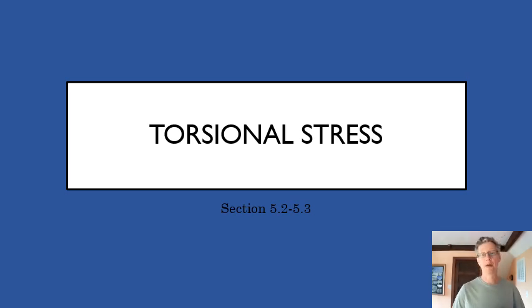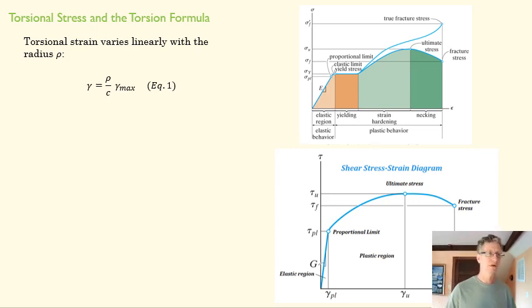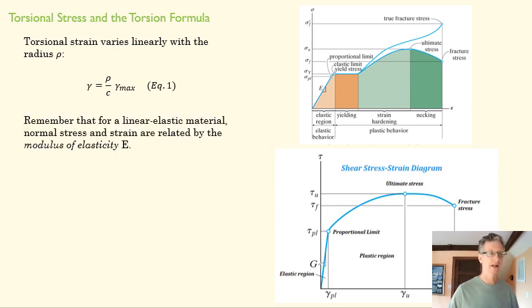Last time we talked about torsional deformation. Now we're going to talk about the stress that creates on our material. We know torsional strain varies linearly with the radius. That's what we figured out last time.